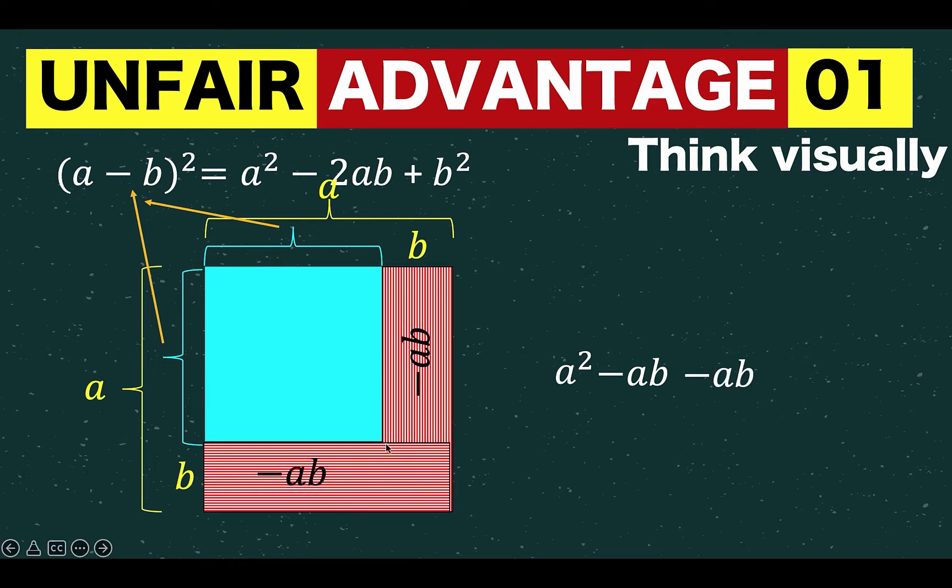Notice that we counted this area twice, because that's already computed in the first rectangle, and that's computed again in the second rectangle. So we need to return back this part that was counted twice. And so we need to add that part that was subtracted twice. And we now have this plus b squared.